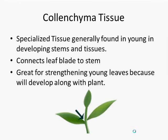Collenchyma cells are not found as often in plants, but are found at specific locations and at specific points in development. Collenchyma tissue is found in young, developing stems and tissues, and is generally found in the area where the leaf blade attaches to the stem.